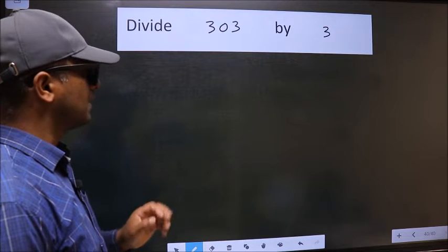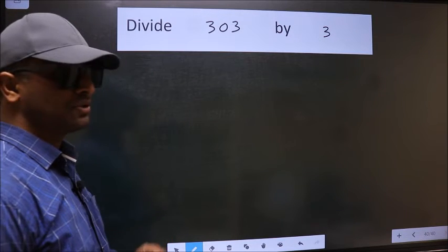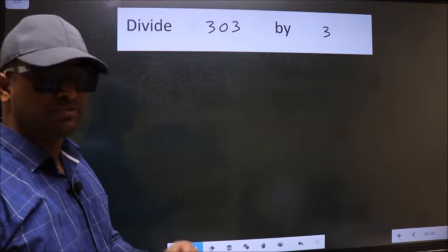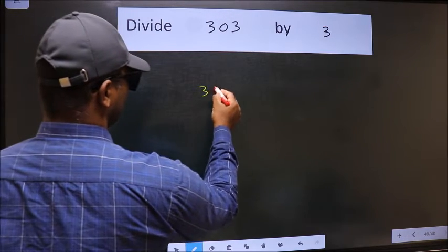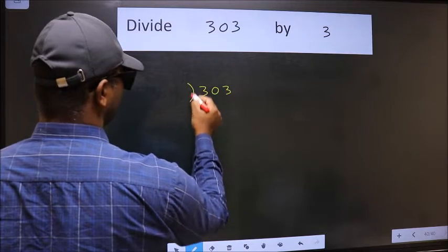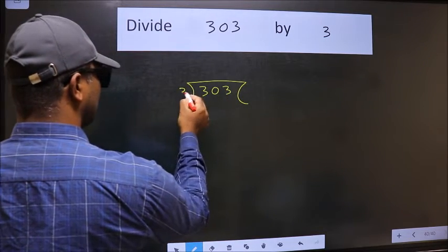Divide 303 by 3. To do this division, we should frame it in this way: 303 and 3 here.